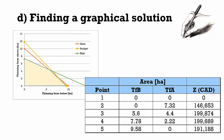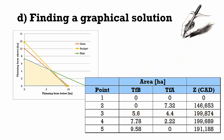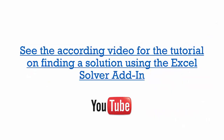We calculate the returns for the remaining combinations of thinning type A and B, and conclude that the ideal mixture to maximize returns is to carry out thinning from below on 5.6 of the 10 hectares and thinning from above on 4.4 hectares. You are now able to use a graphical solution approach for a linear decision problem. Please have a look at my video on how to use the Excel solver add-in for a linear optimization problem next.